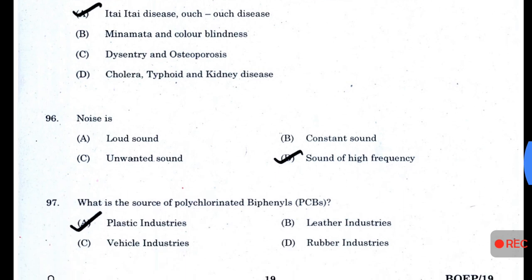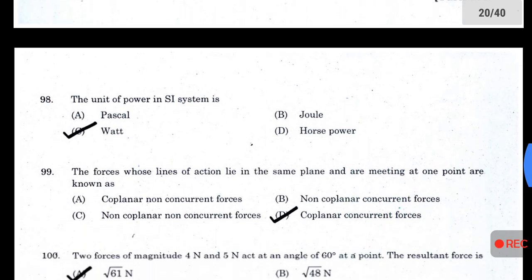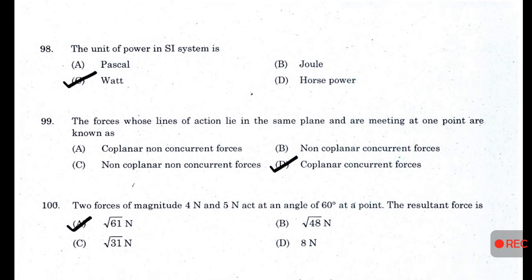Answer A — noise is sound of high frequency. What is the source of polychlorinated biphenyls (PCBs)? — Plastic industries. The unit of power in the SI system is the watt. The force lines of action in the same plane and meeting at one point are known as coplanar concurrent forces. The forces of magnitude 4N and 5N at an angle of 60 degrees at a point give a resultant force of √61 N.